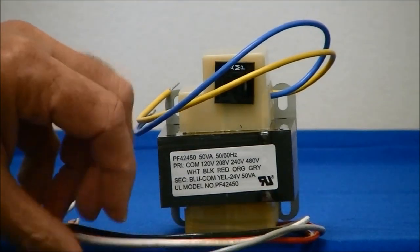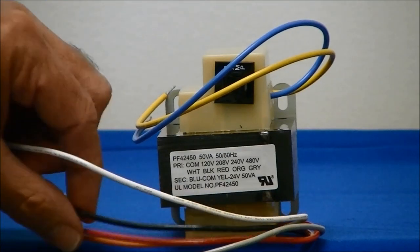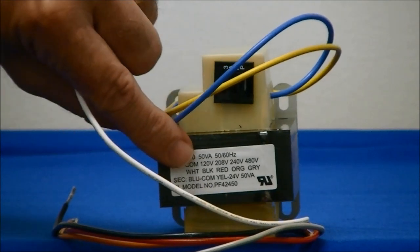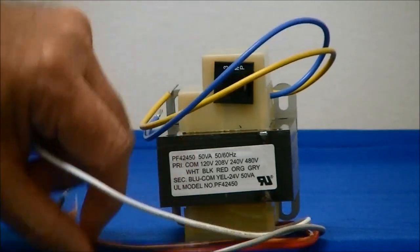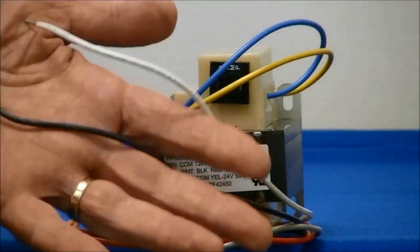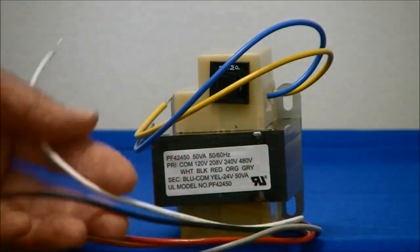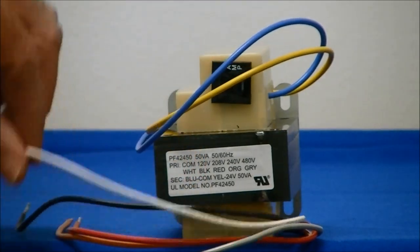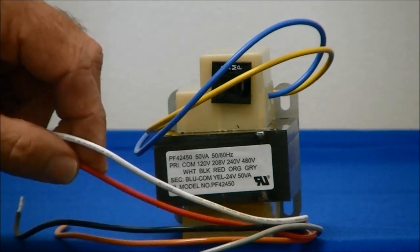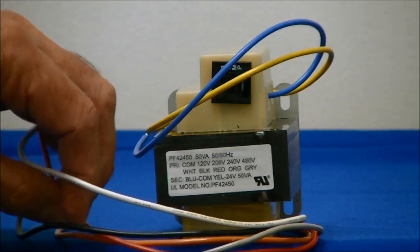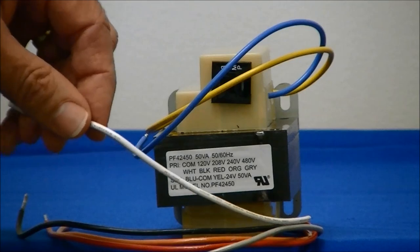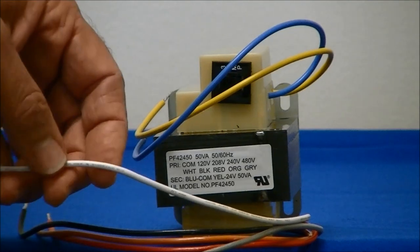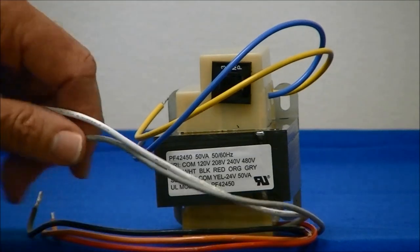So for the primary voltages, utilizing it on 120 volt, we connect the white lead to one side of the power, and the black lead to the other power lead. To operate on 208 volts, connect the white and the red to the power. For 240 volts, we connect the white and the orange to the power. And for 480 volts, the white and the gray to power.